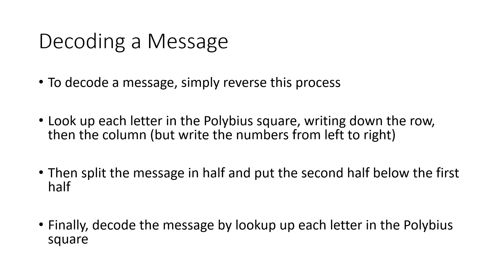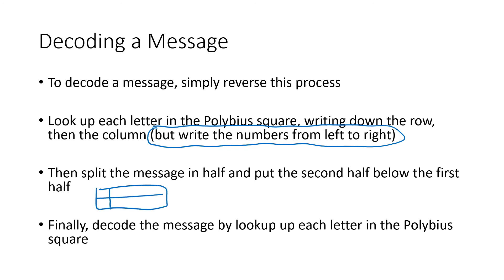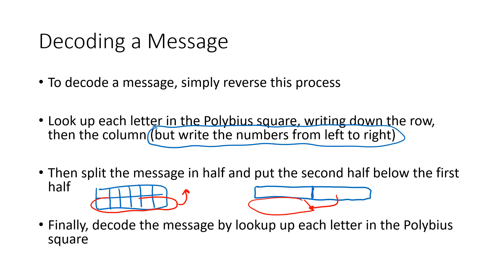To decode a message, we just reverse this process. We look up each letter in our square, writing down the row and then the column in a big long row from left to right. Then we split the list in half and put the second half below the first half — the reverse of what we did during encoding. Then we decode by looking up each pair of numbers as row and column in the square.